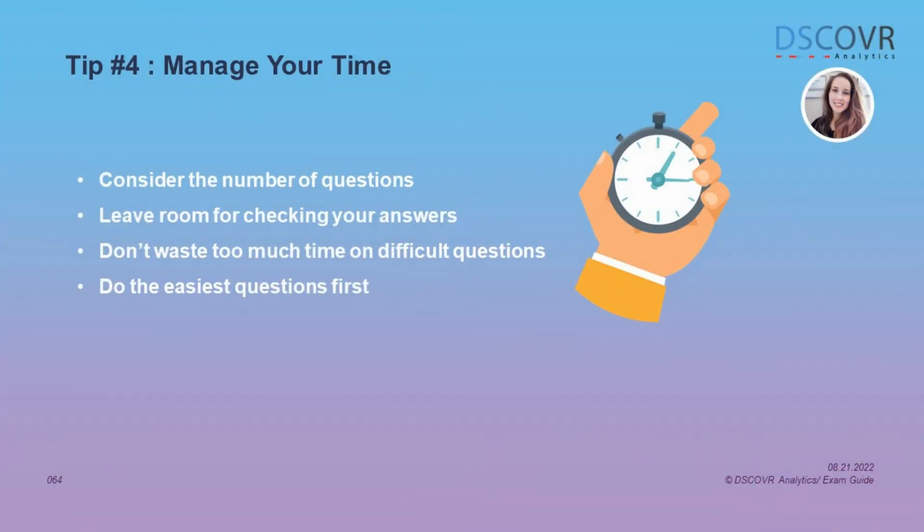Tip number four is all about time management. When starting your multiple-choice exam, the first thing you might want to do is look at how many questions there are in each section and divide your time into segments. This ensures you have enough time to answer all the questions. You also need to budget at least 10 minutes to review your answers at the end. Remember that multiple-choice questions are usually weighted equally, so there is little benefit in completing hard questions over easy ones. Sometimes answering easy questions first can offer insight into answering more challenging questions.